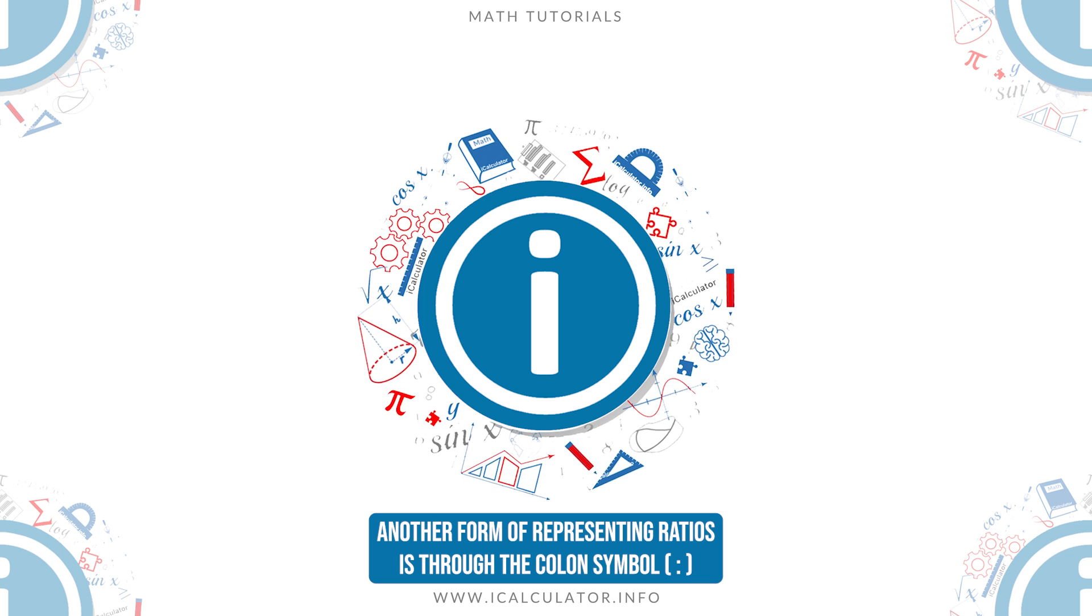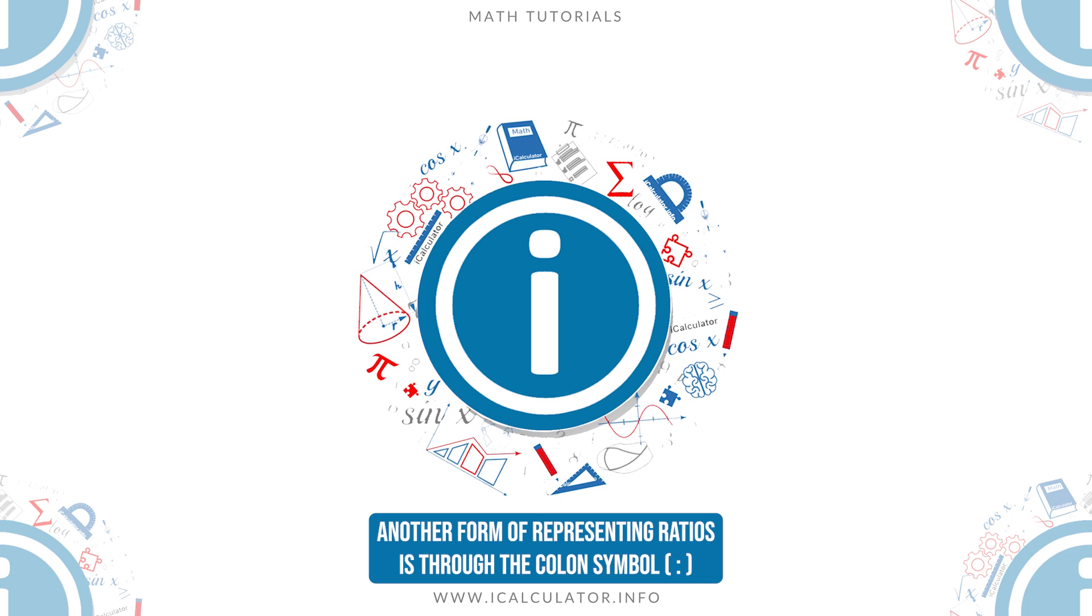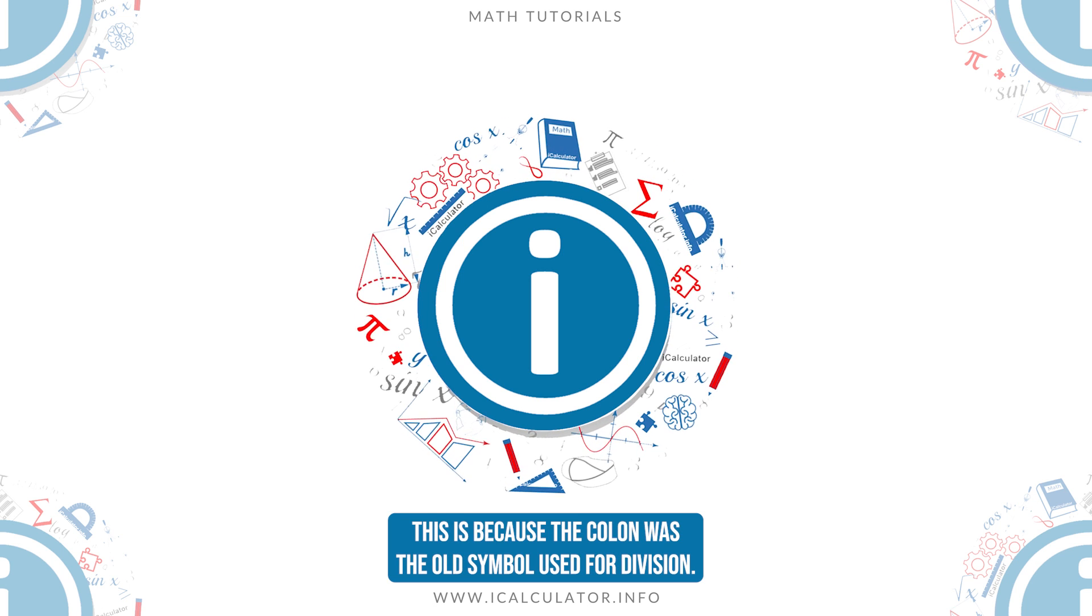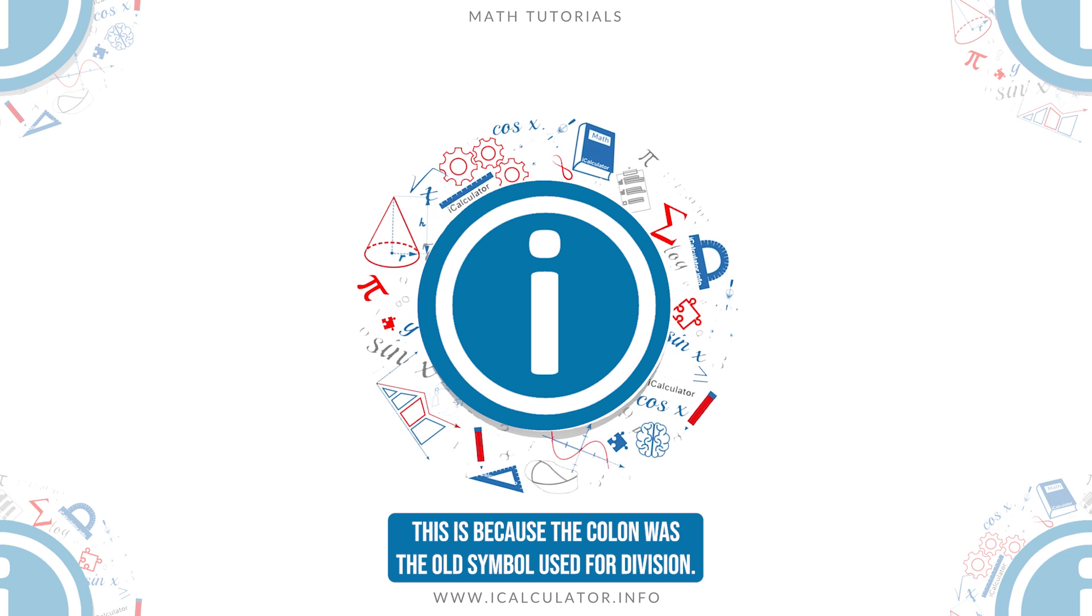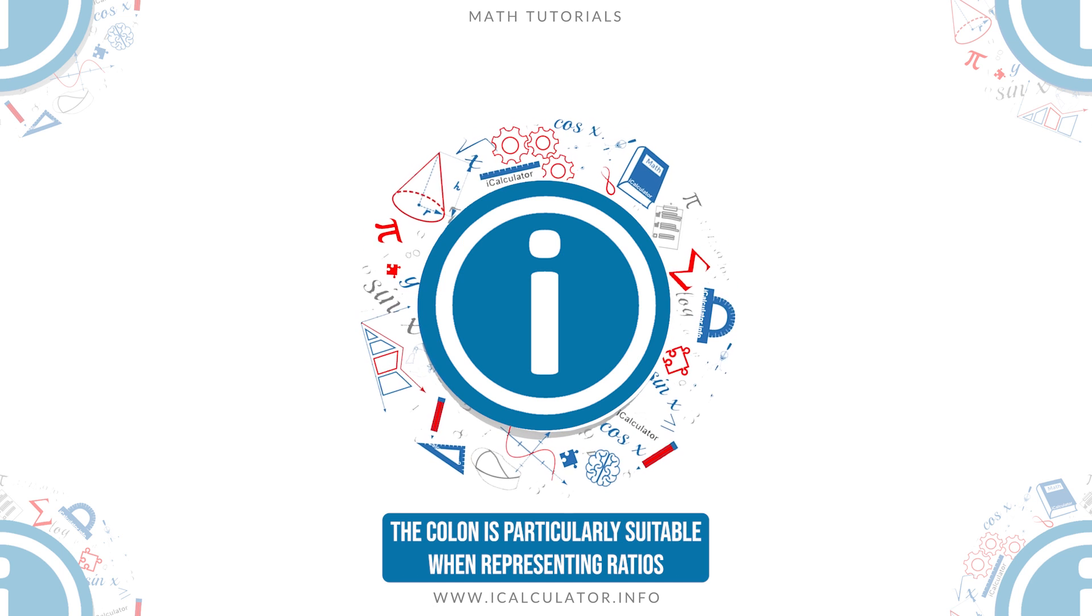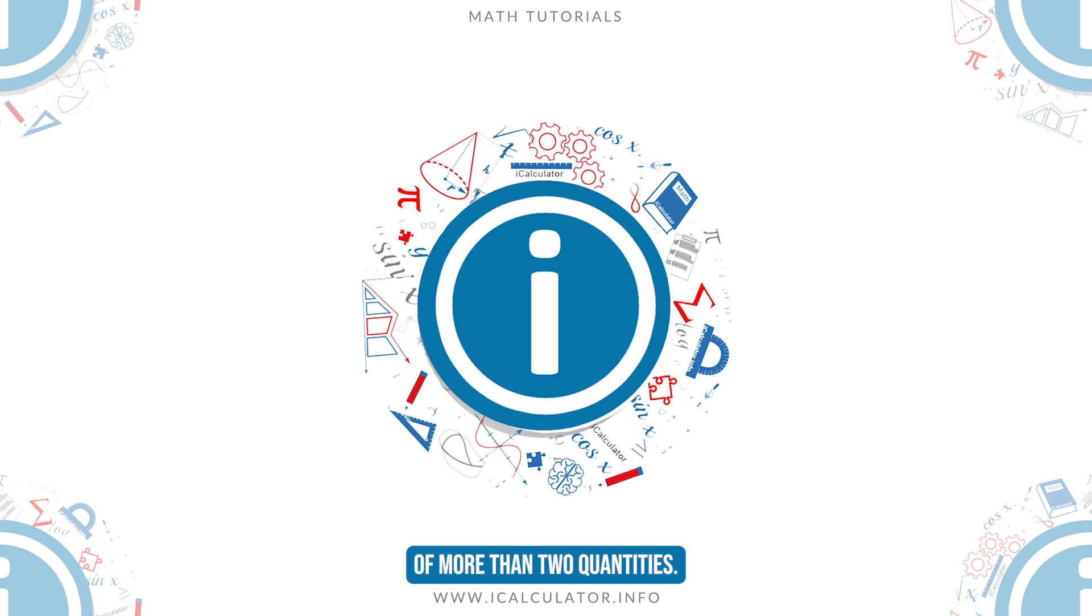Another form of representing ratios is through the colon symbol. This is because the colon was the old symbol used for division. The colon is particularly suitable when representing ratios of more than two quantities.